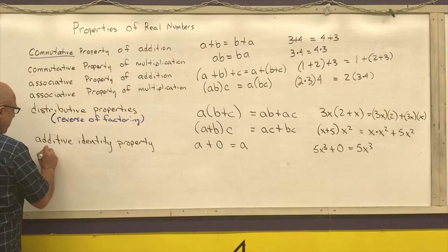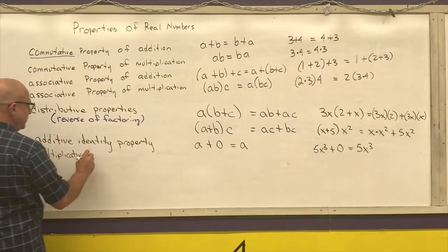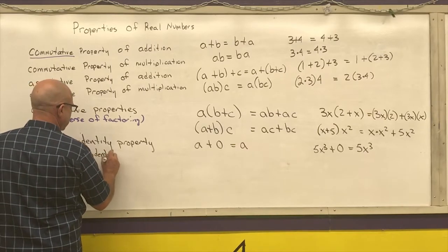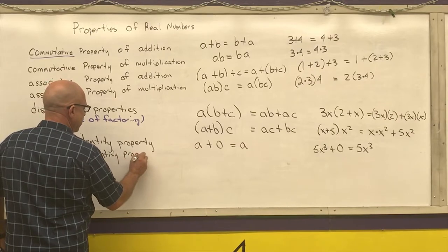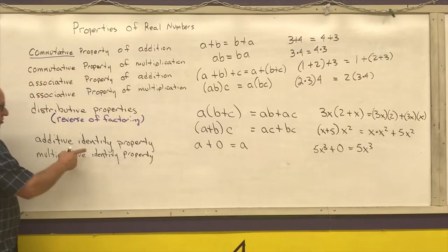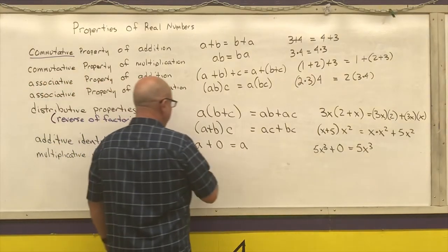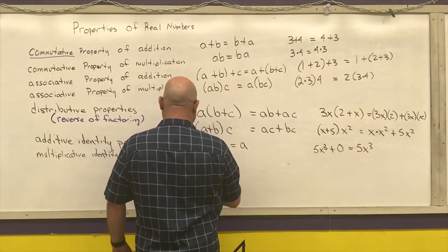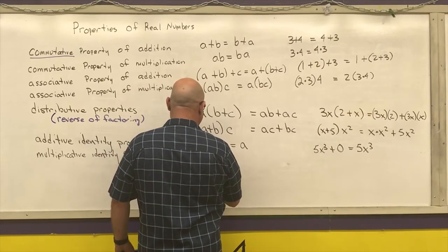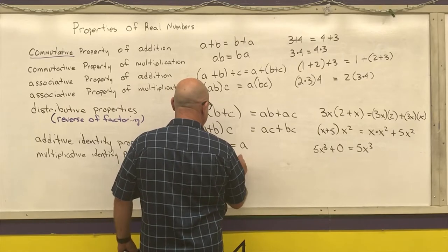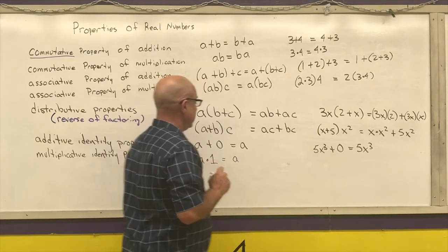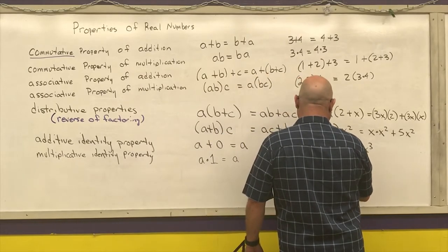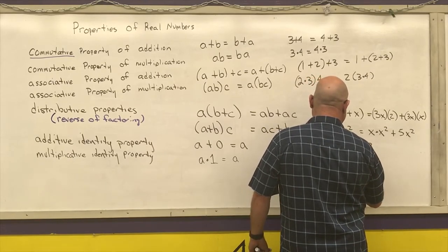Next, we have multiplicative identity. And you should see that after this example, an identity property is something that gets me back to my original number. So multiplicative identity property is A times 1 gives me back to just A. So if I have 3x squared times 1, I just would write down 3x squared.